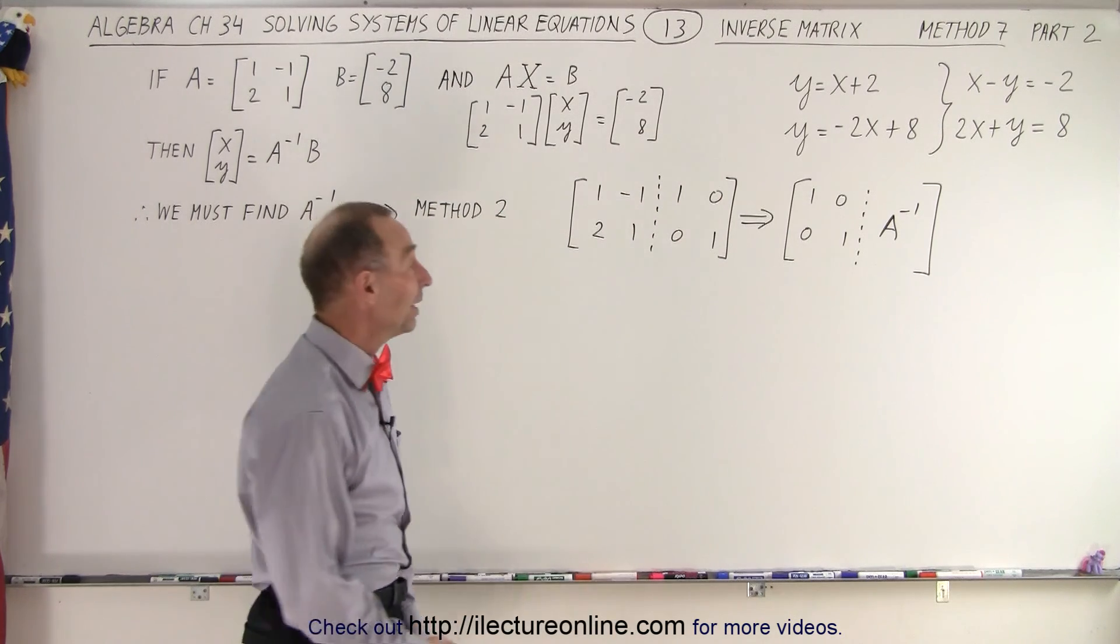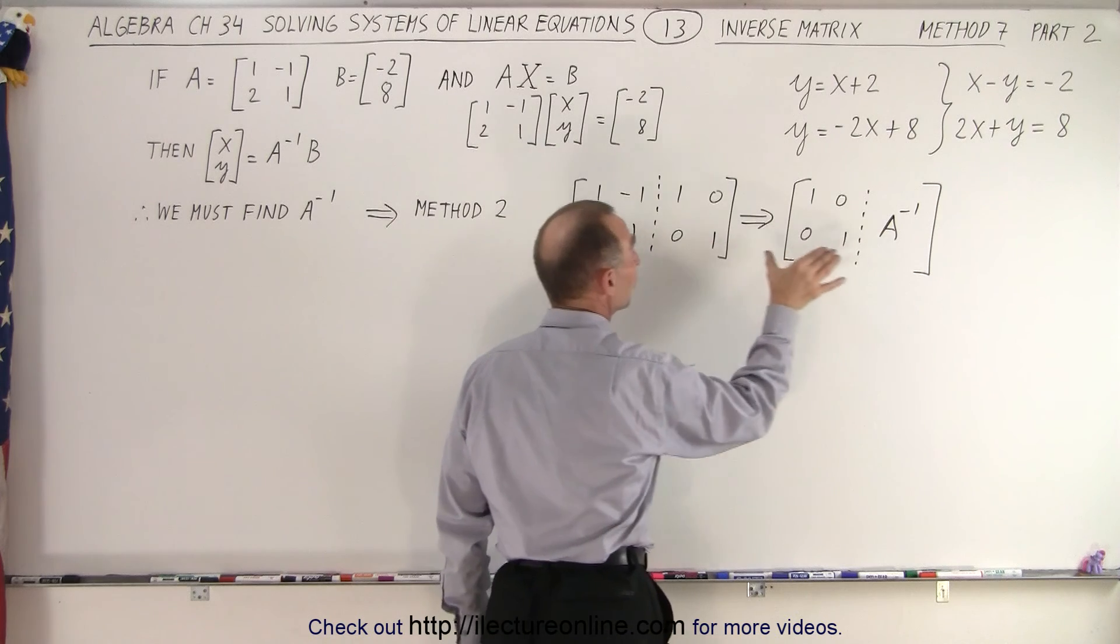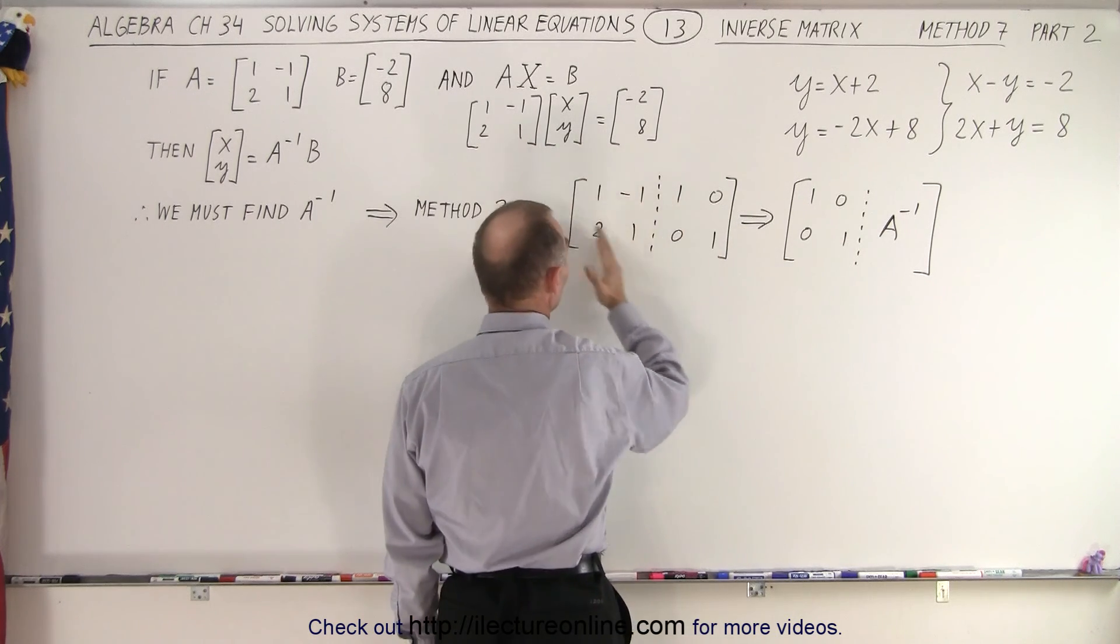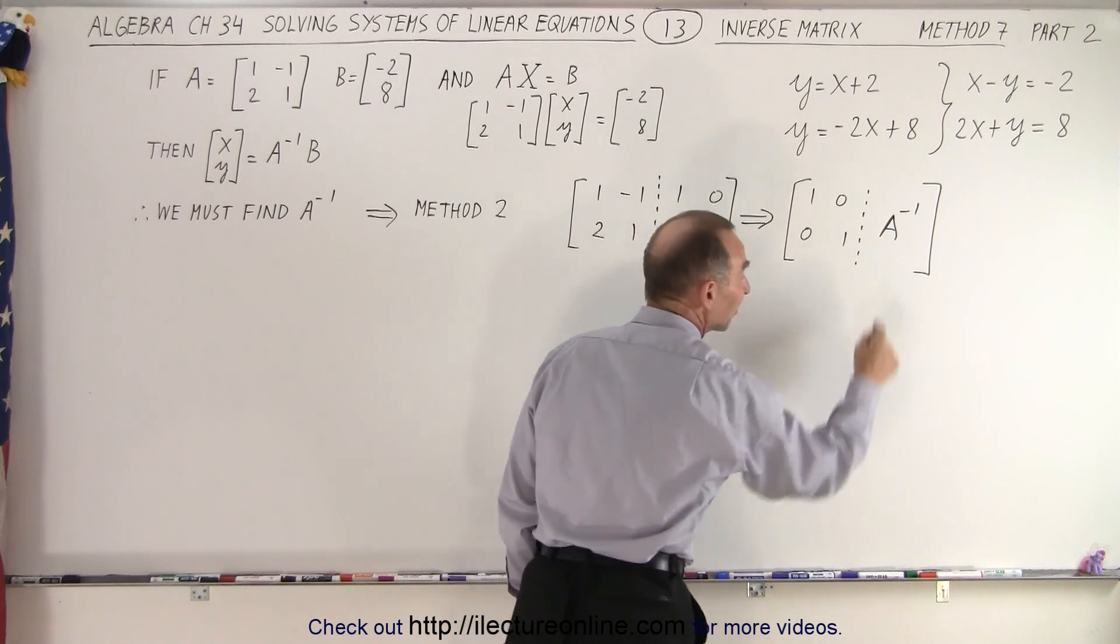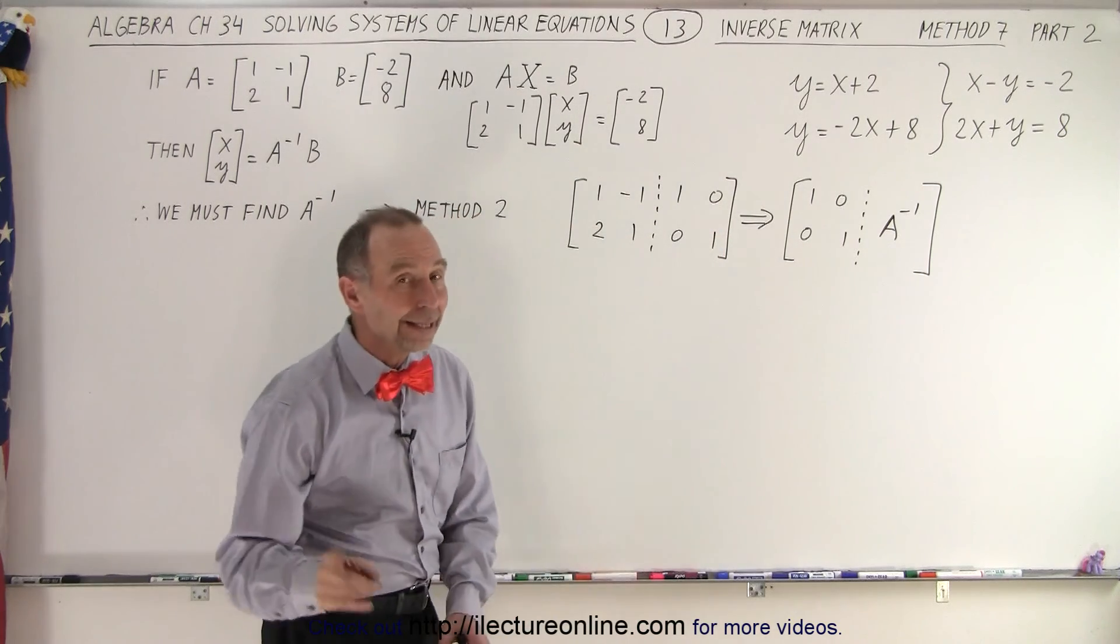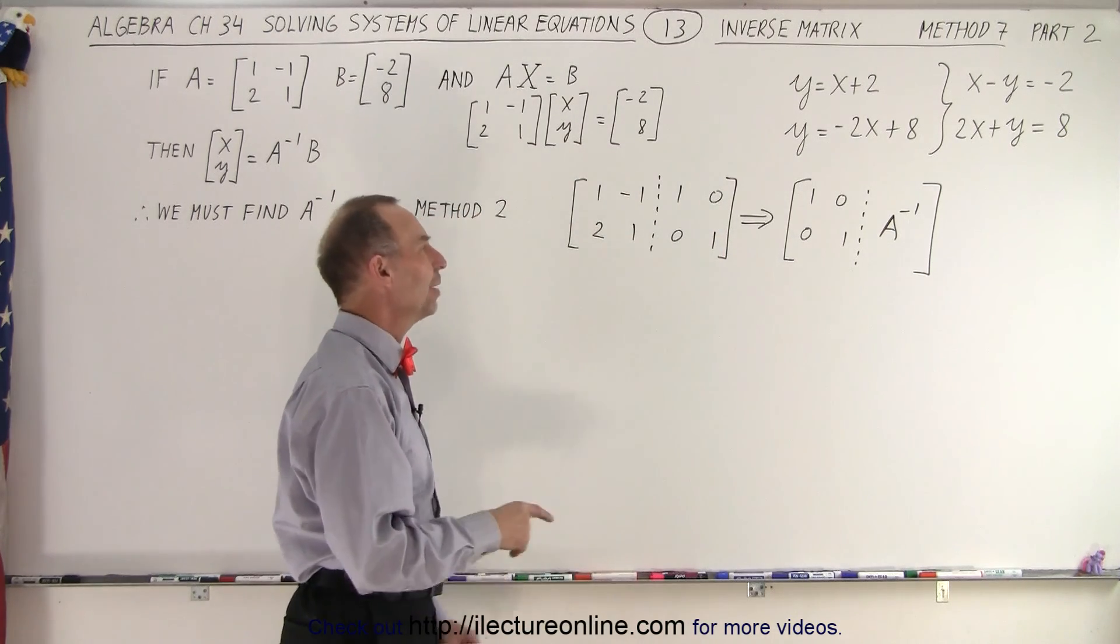And so what we want to do is take this and convert it to this. We want to take the left side and convert it to the identity matrix and then the right side will then automatically be the inverse matrix of A.